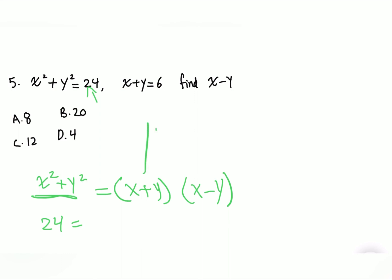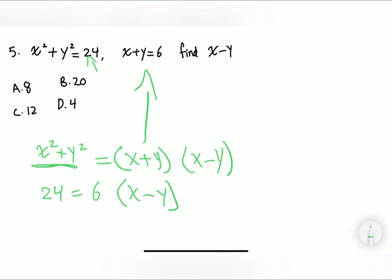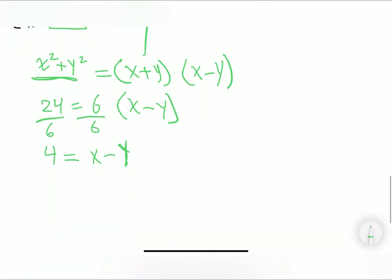Plugging in: 24 = 6 × (x − y). Dividing both sides by 6: since 6 × 4 = 24, we get x − y = 4. The answer is D. That completes all five questions.